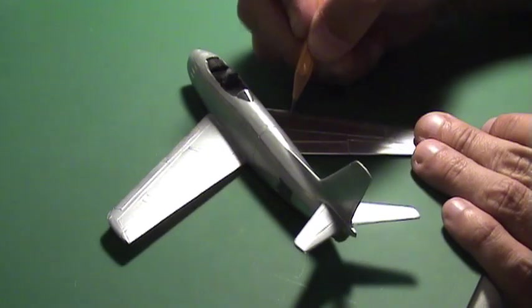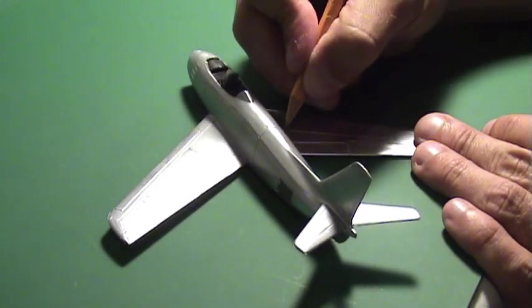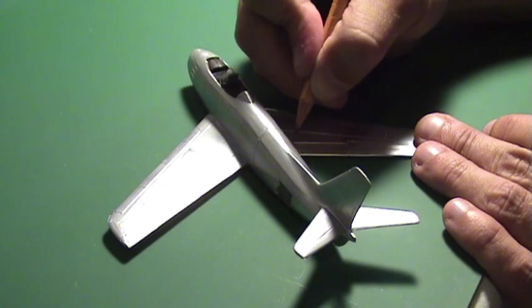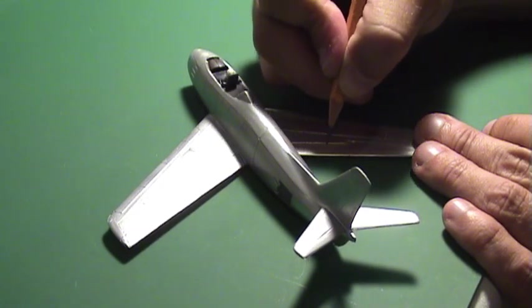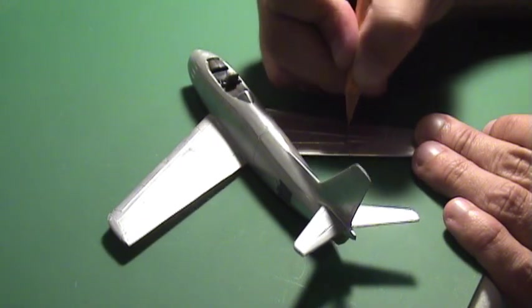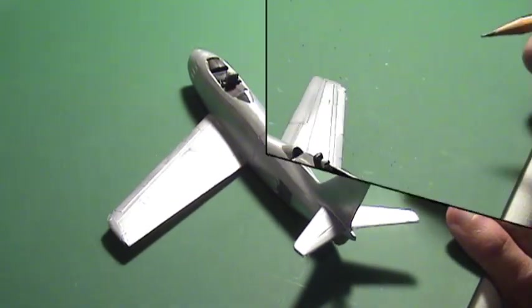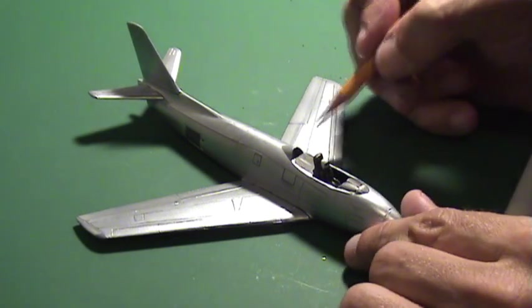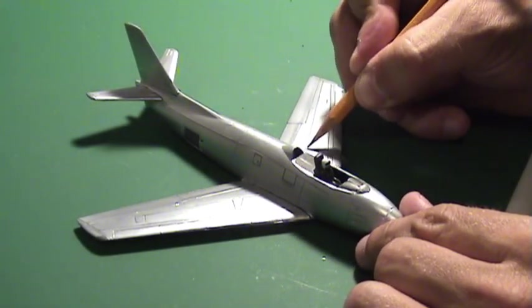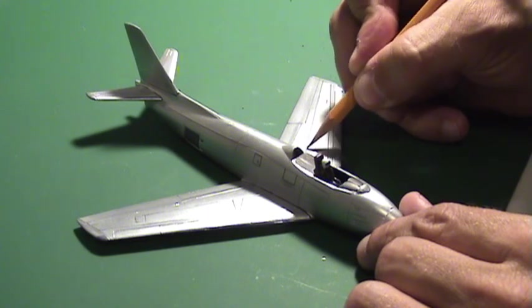Use a well-sharpened number 2 pencil to carefully draw over the panel lines of the model. This technique will improve the contrast and help the panel lines be more visible, especially on airplanes with a metallic finish.